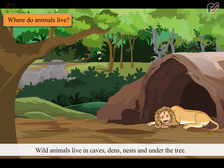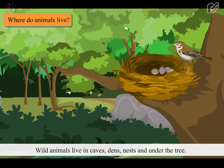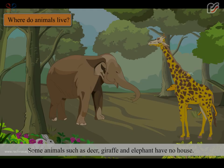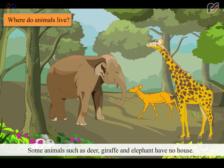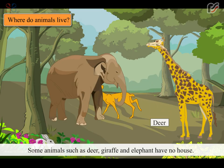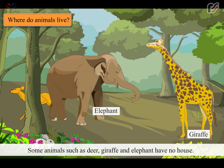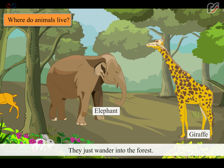Wild animals live in caves, dens, nests and under the tree. Some animals such as deer, giraffe and elephant have no house. They just wander into the forest.